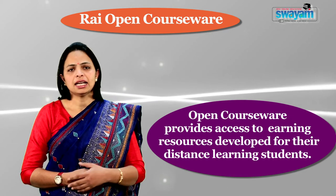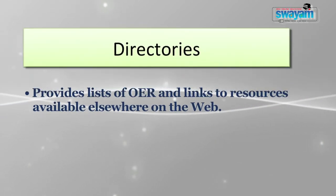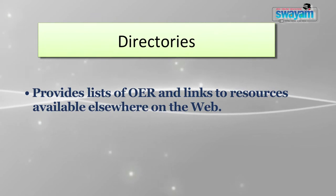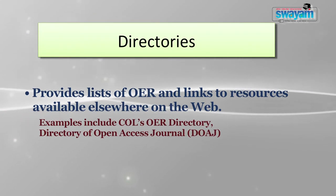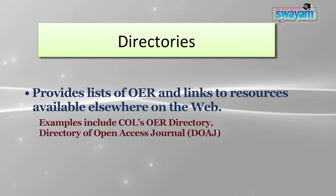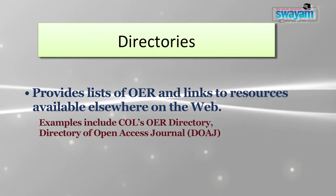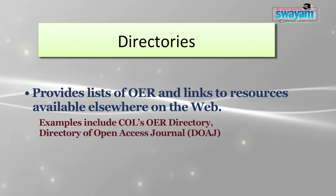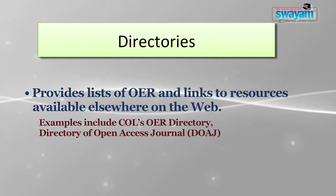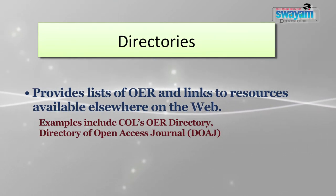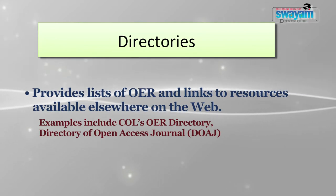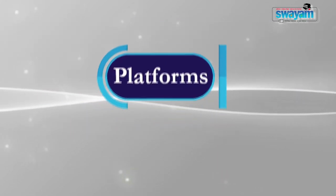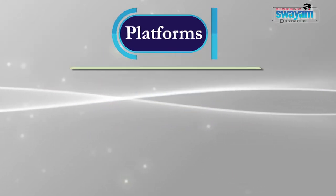One category is directories. A directory provides a list of open educational resources and links to resources available elsewhere on the web. Examples include Kohl's OER directory and, in the case of open access journals, the Directory of Open Access Journals (DOAJ), which links to research articles.